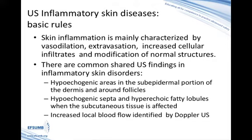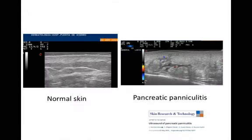There are common shared ultrasound findings in inflammatory skin disorders: hypoechoic areas in the subepidermal portion of the dermis and around follicles, hypoechoic septa and hyperechoic fatty lobules when the subcutaneous tissue is affected, and increased local blood flow identified by Doppler. Here we may see the differences between normal skin and an example of an inflammatory skin disorder such as pancreatic panniculitis — disorganization of normal structures, hypoechoic dermal areas, hypoechoic septa, and hyperechoic fatty lobules.